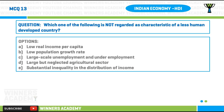Question number thirteen: which one of the following is not regarded as a characteristic of a less human developed country? Option A) low real income per capita, option B) low population growth rate, option C) large-scale unemployment and underemployment, option D) large but neglected agricultural sector, option E) substantial inequality in the distribution of income.